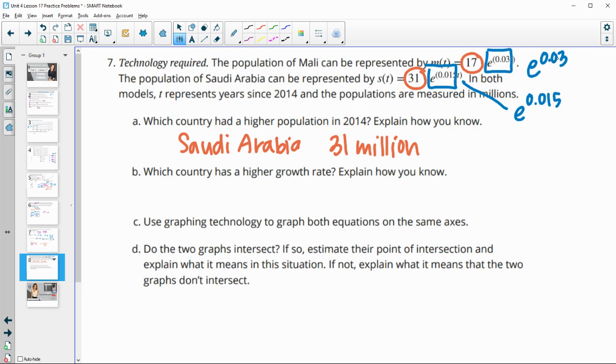So we know that Mali had a higher growth rate because its growth rate is e to the 0.03, and that's bigger than e to the 0.015. And if you needed to type these into your calculator, you could certainly do that if you wanted to just be safe and make sure that you checked those. So e to the 0.03 is 1.03, and then e to the 0.015 is 1.015. So this one's larger.